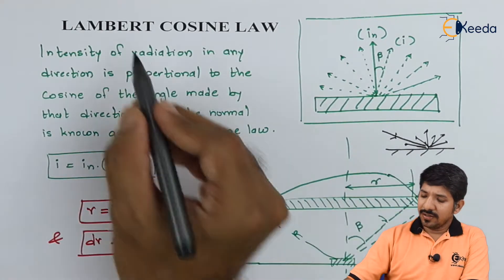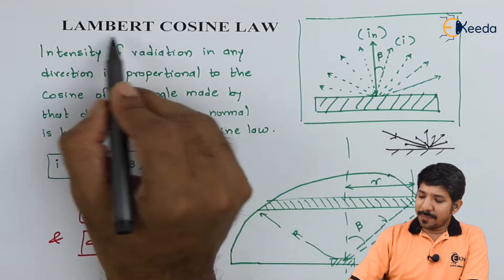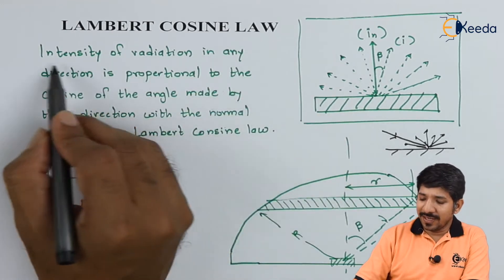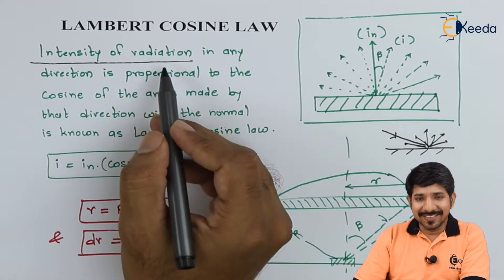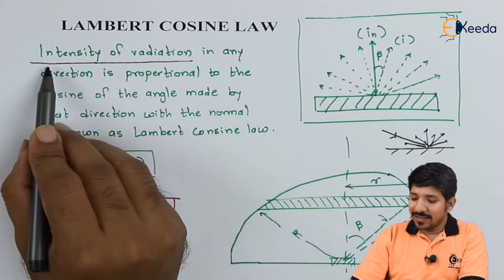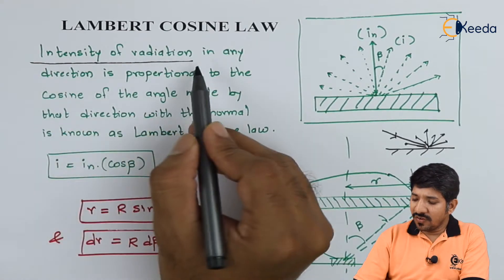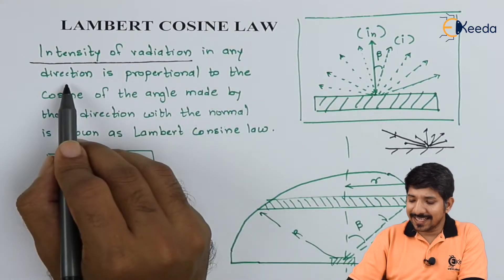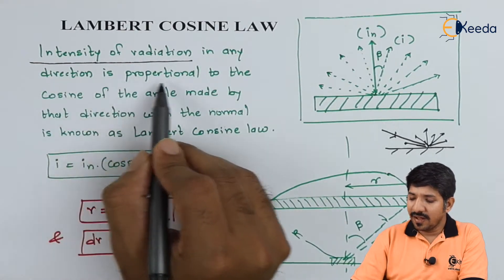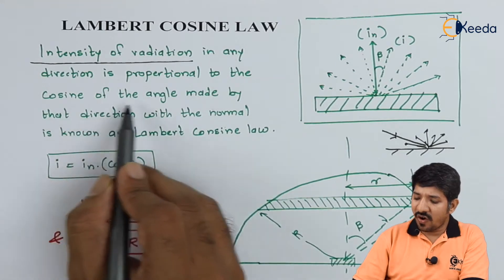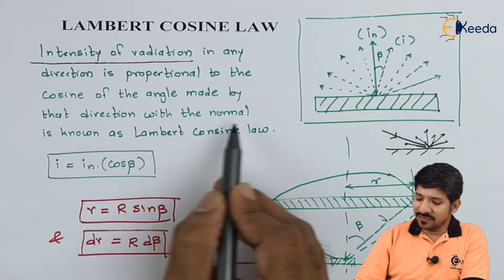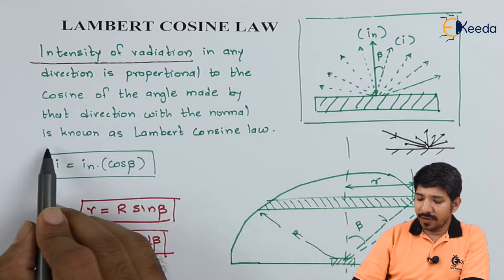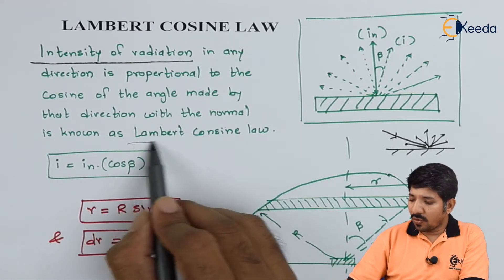That is what Lambert's cosine law talks about. Basically, it talks about the intensity of radiation. What it is saying is that the intensity of radiation in any direction is proportional to the cosine of the angle made by that direction with the normal. This is known as Lambert's cosine law.